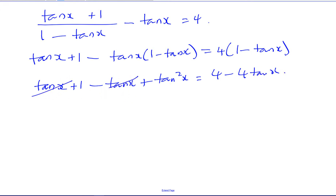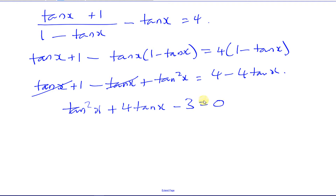tan(x) minus tan(x) is zero, so on the left side we're left with tan²(x) + 4tan(x), and 1 minus 4 gives minus 3, so we have tan²(x) + 4tan(x) − 3 = 0. This is a quadratic equation in tan(x). To make life easy, let y equal tan(x), so this is y² + 4y − 3 = 0.